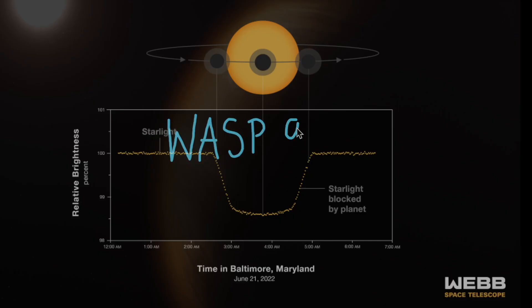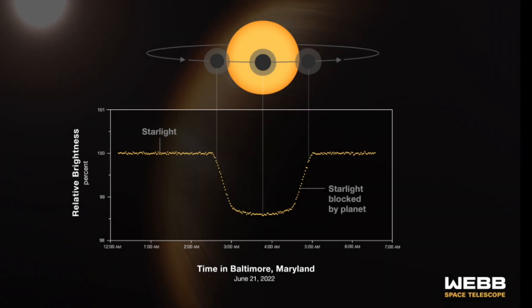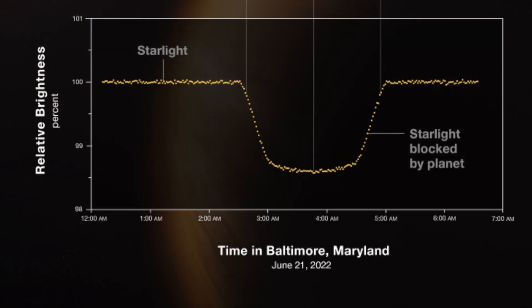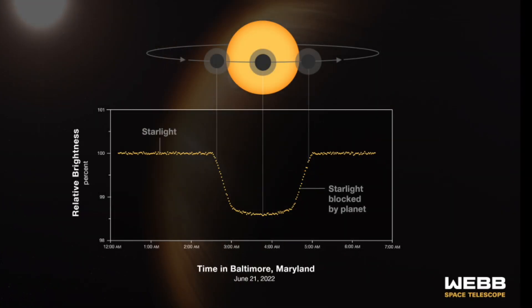JWST also helps us gather information about distant planets. WASP-96b is the name of an exoplanet slightly larger than Jupiter that orbits the star WASP-96. It was detected via transit, which we can see from this light curve. Webb observed the parent star for over six hours, shown by the range in time on the x-axis. Around 2:30 AM, the gassy giant began to pass in front of the star, blocking some of the light and causing the dip in the light curve we see here.